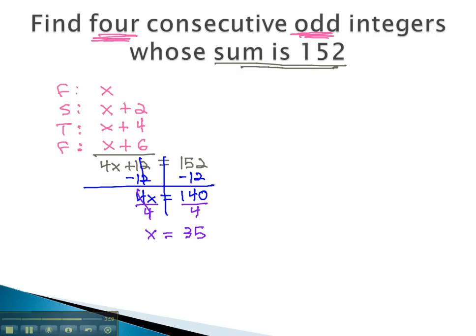An odd number, just like we expect. The first number is x, 35. The second number, we add 2 to x. 35 plus 2 is 37.